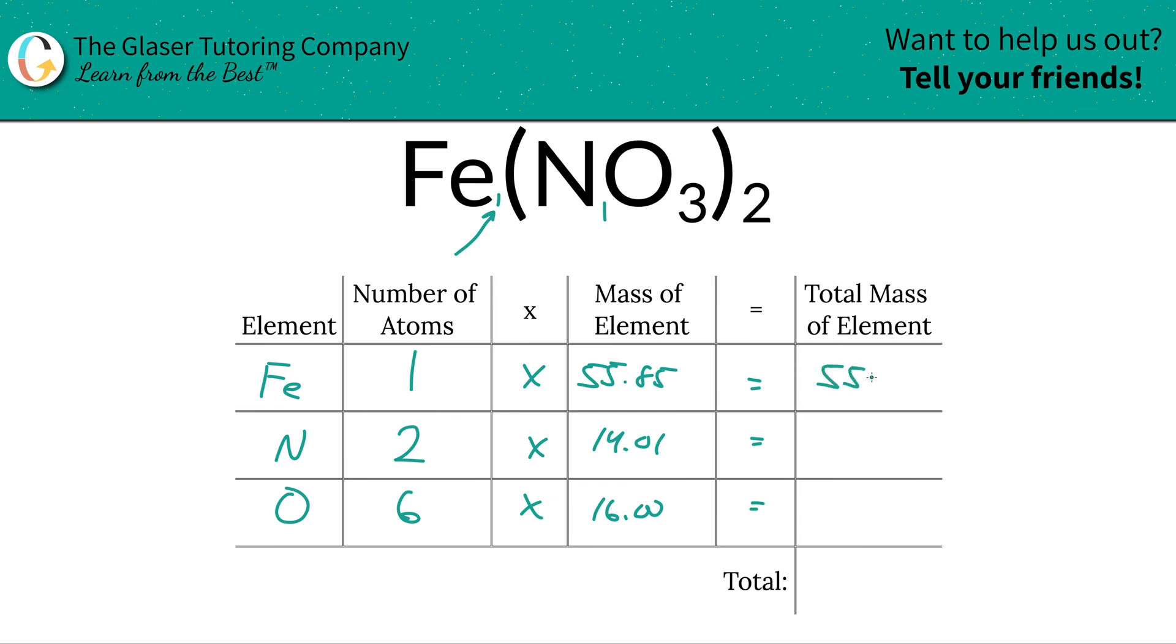So the total mass of iron here is going to be 55.85. Easy peasy. Total mass of nitrogen here is going to be 28.02, and the total mass of oxygen there is going to be 96.